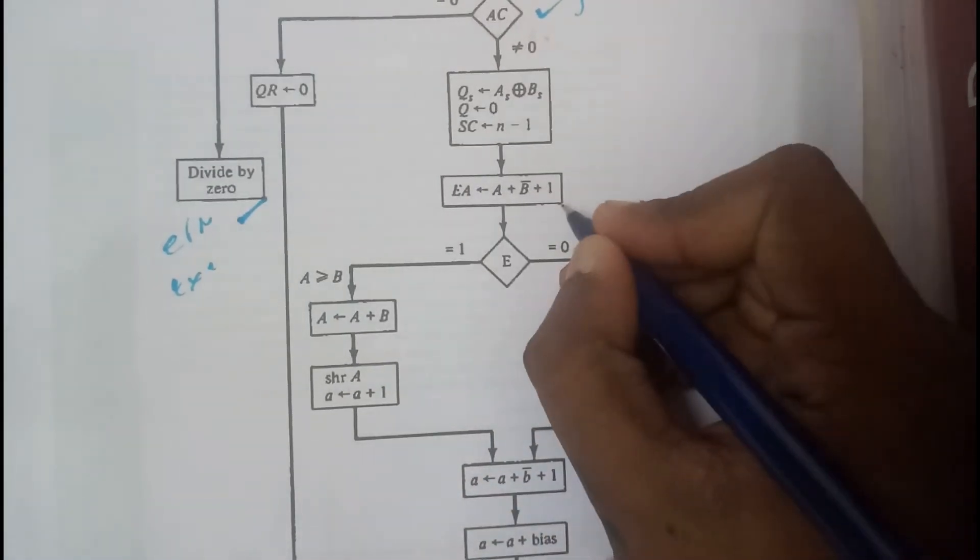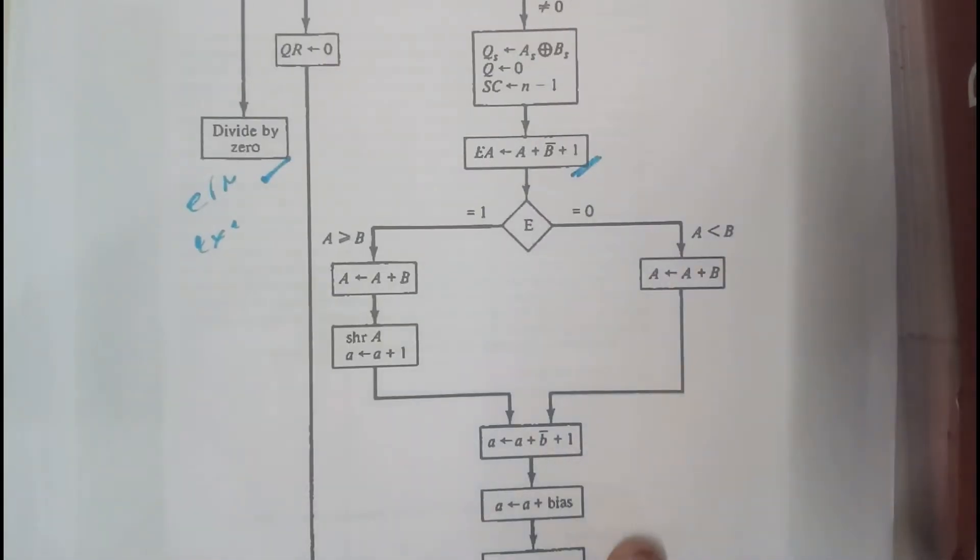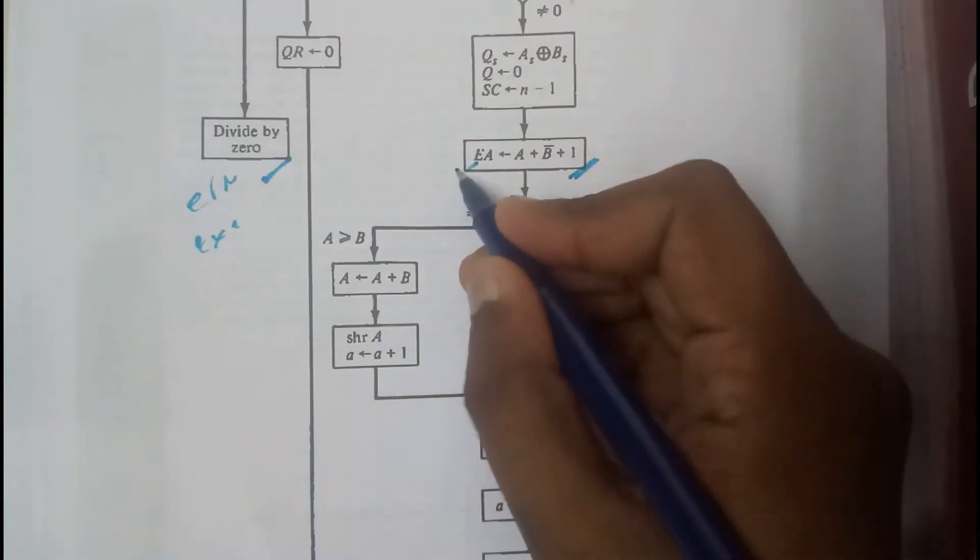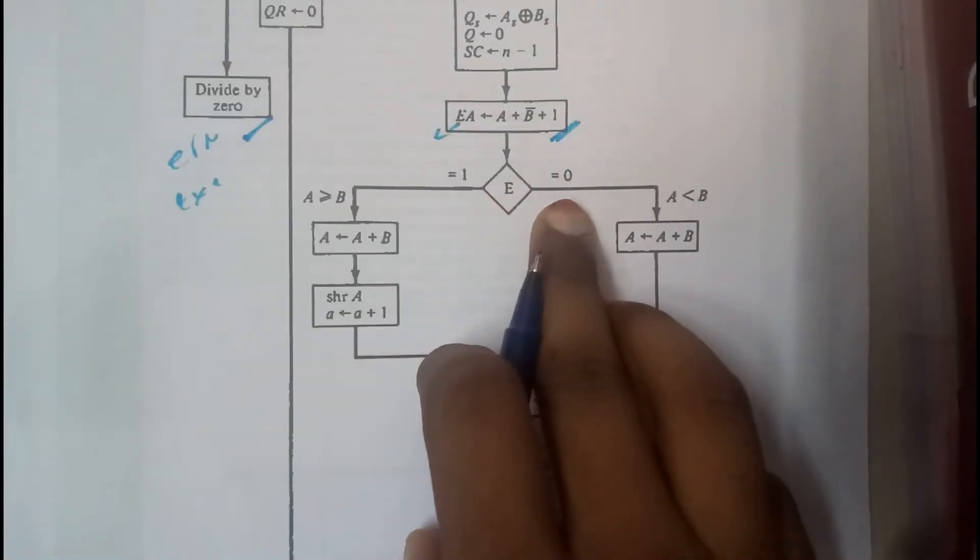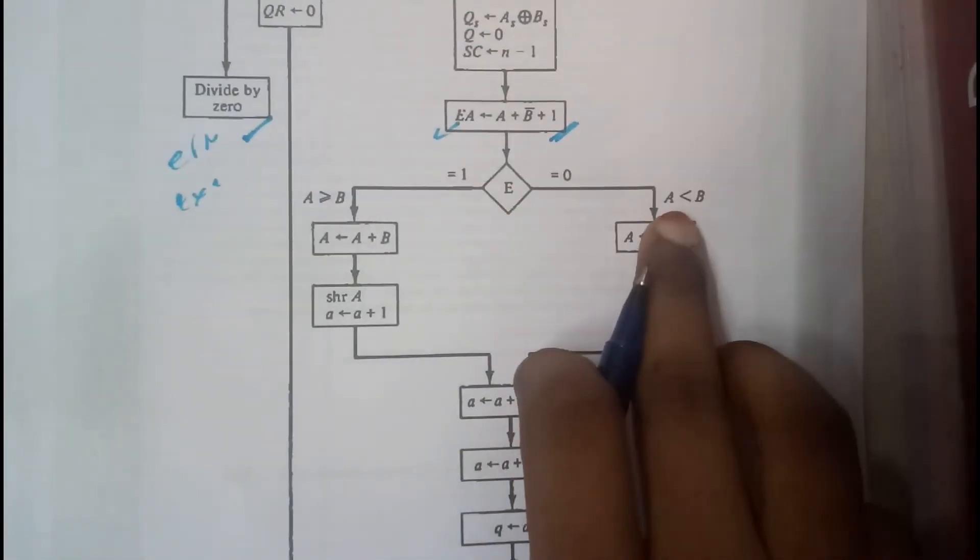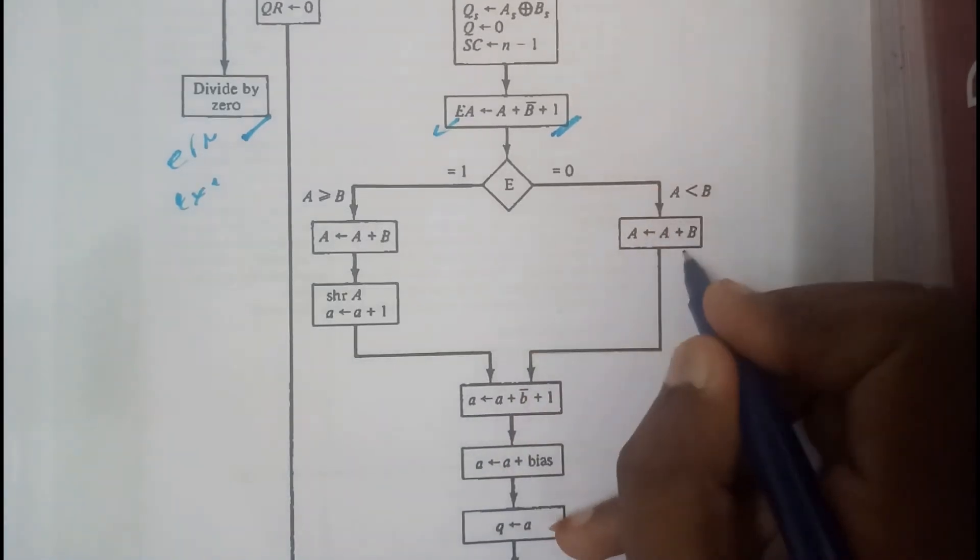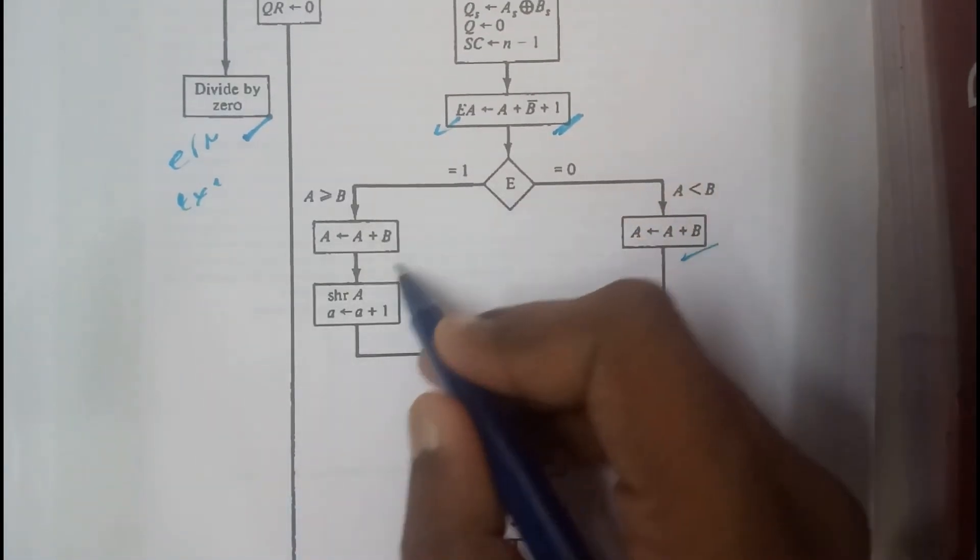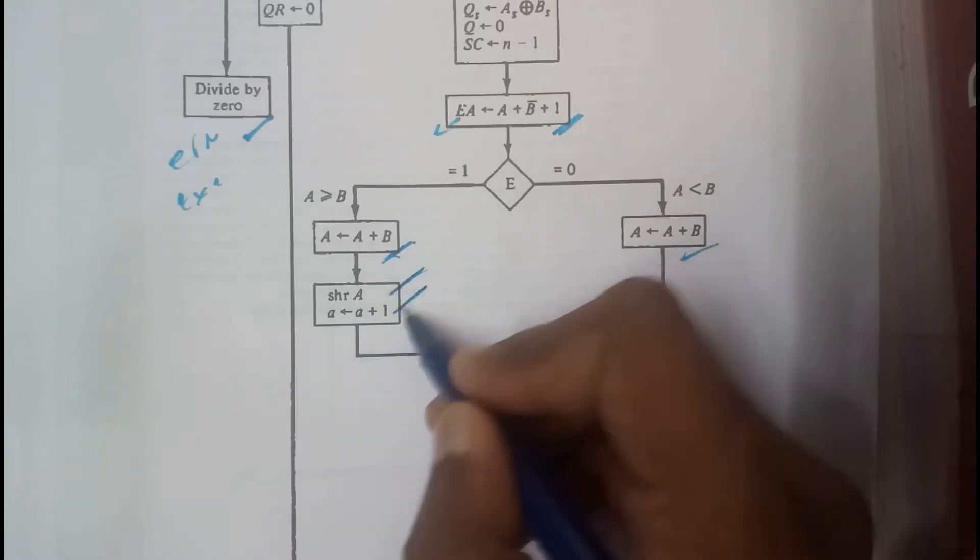Once it is done, we will do the subtraction operation using two's complement. According to the value of E, if E equals zero, that is A is less than B, we will do an addition operation. In the other case, we will do addition operation, shift it, and increment the value of A.